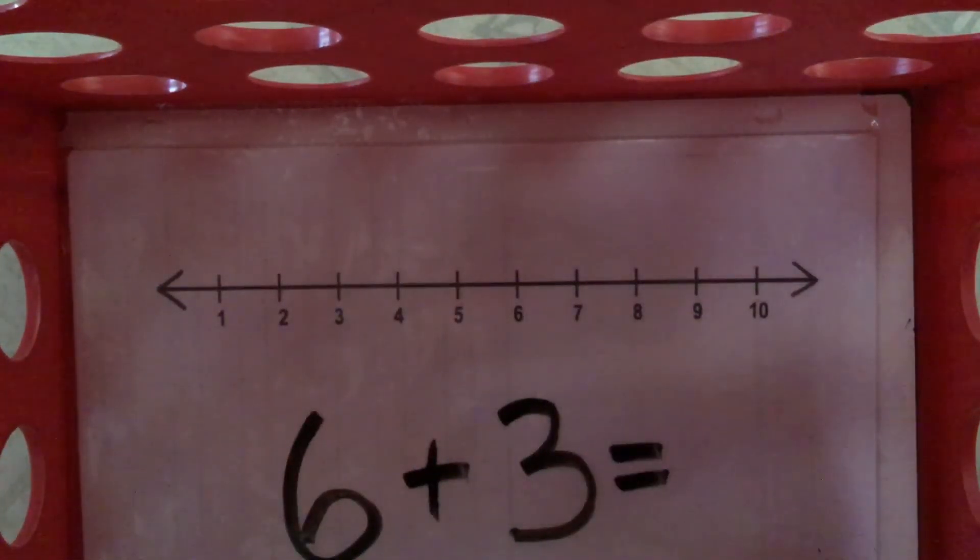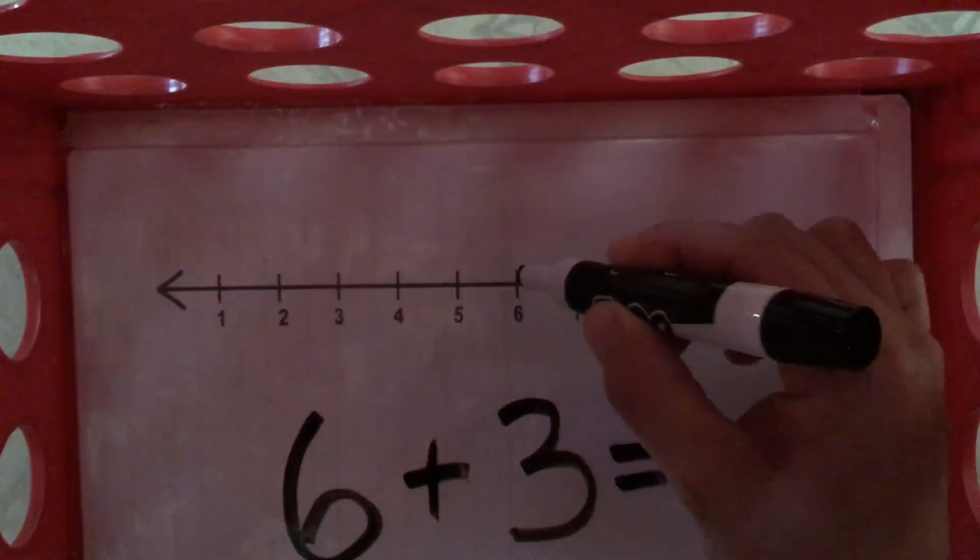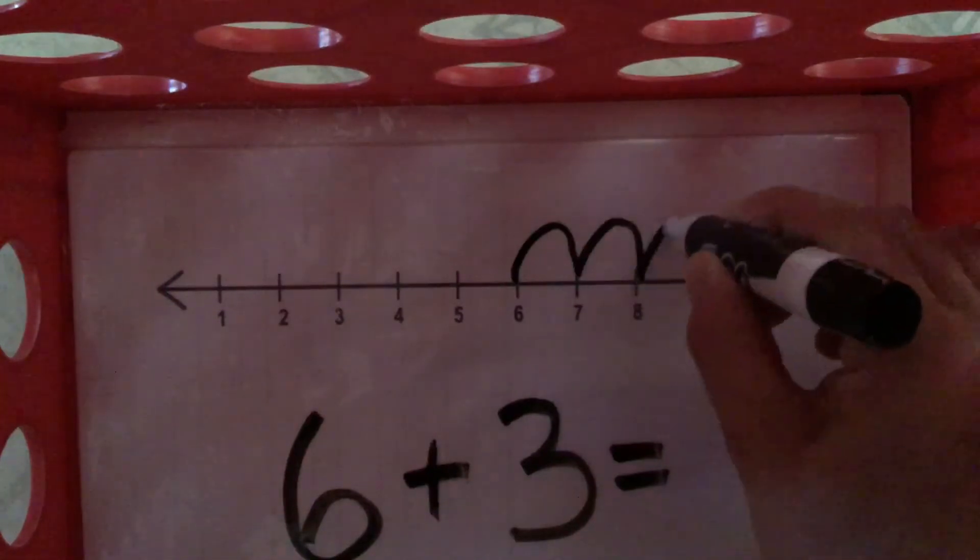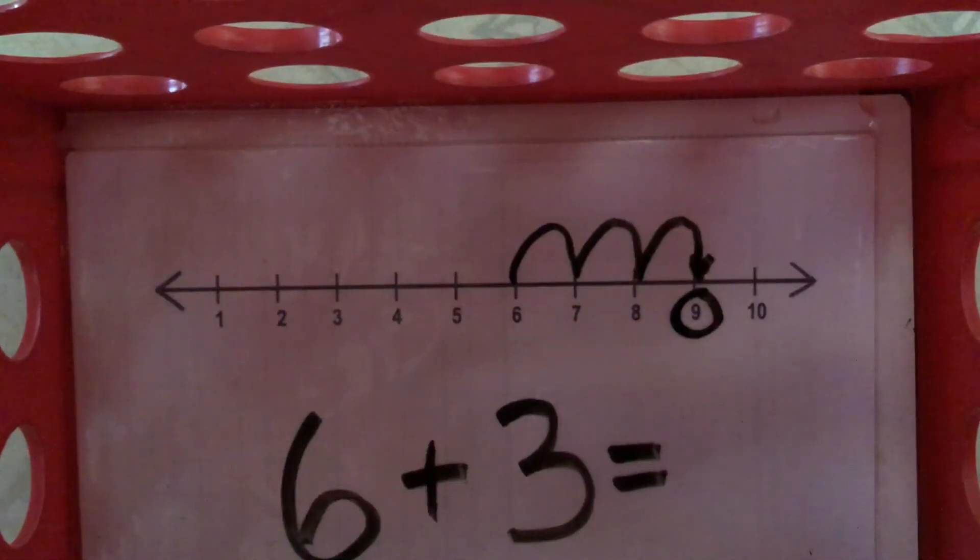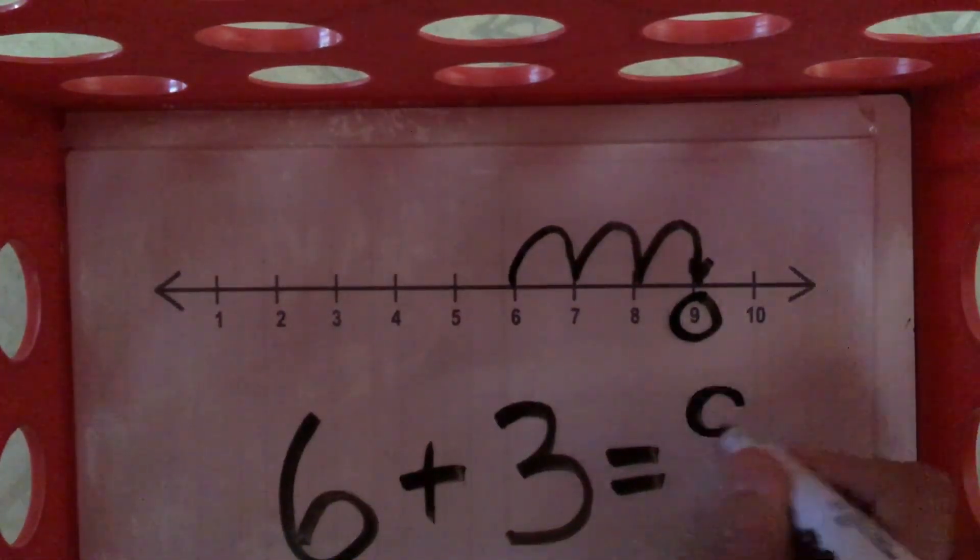So, the 6 tells us where to start on our number line. And we're going to hop 3 spots. Okay? So, let's start at 6. We're going to hop 1, 2, 3. And this is our answer. Circle it so you know where it is. 9. 6 plus 3 is 9. Okay?